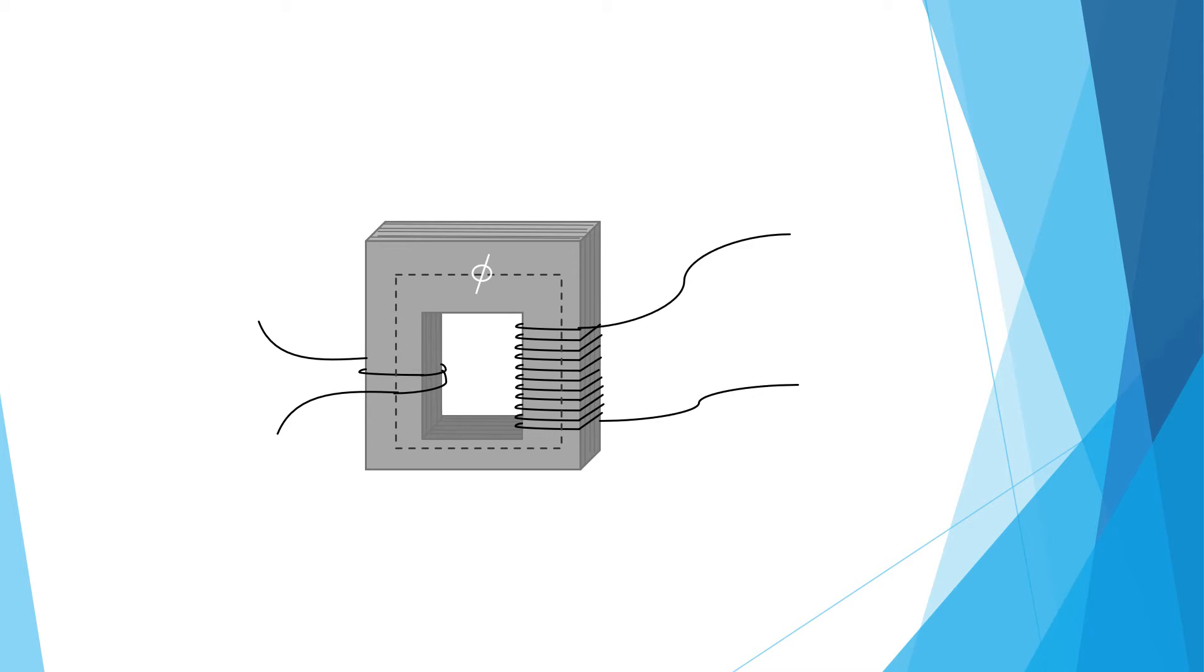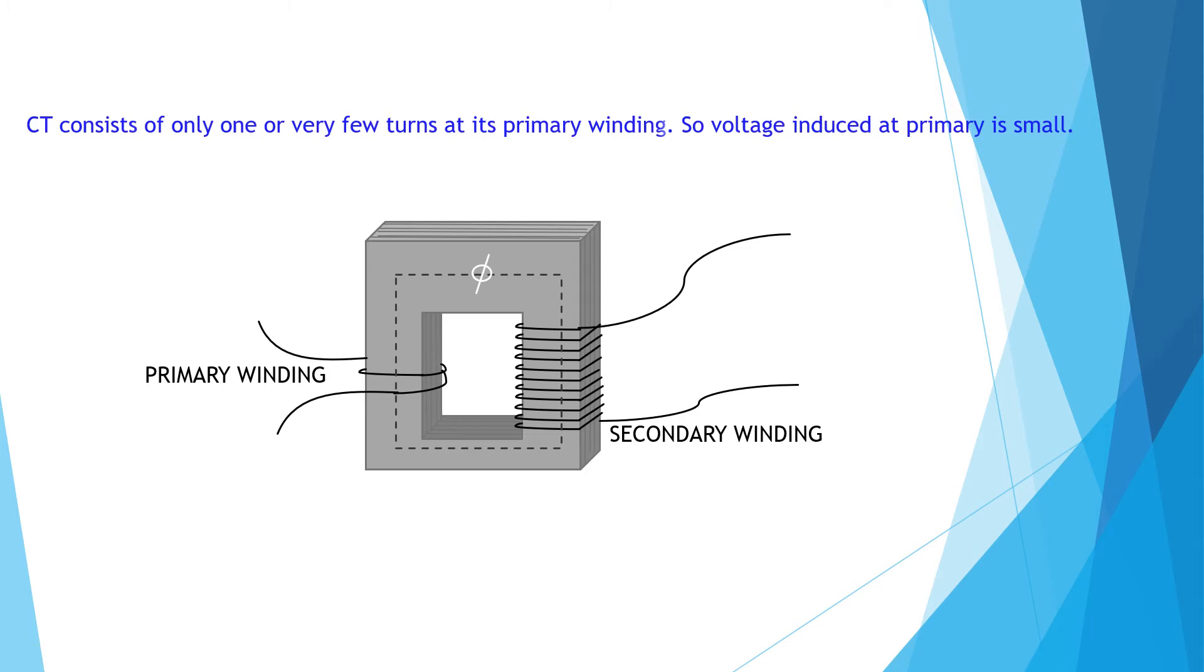In this picture we see a few turns of primary winding and many turns of secondary winding wrapped on a common core. CT consists of only one or very few turns at its primary winding, so voltage induced at primary is small.